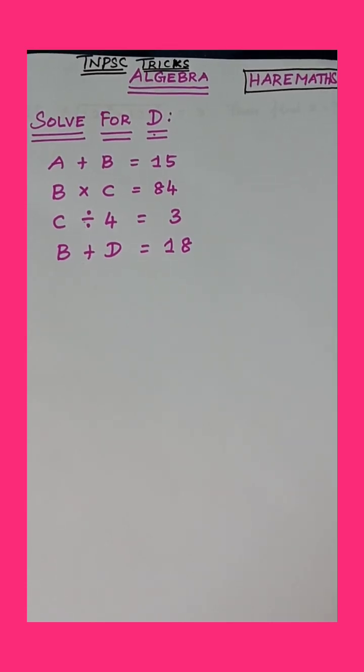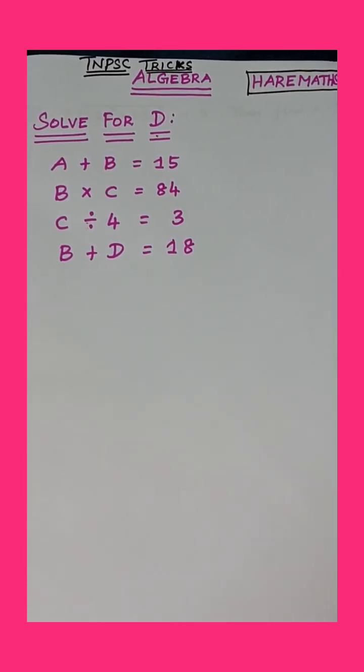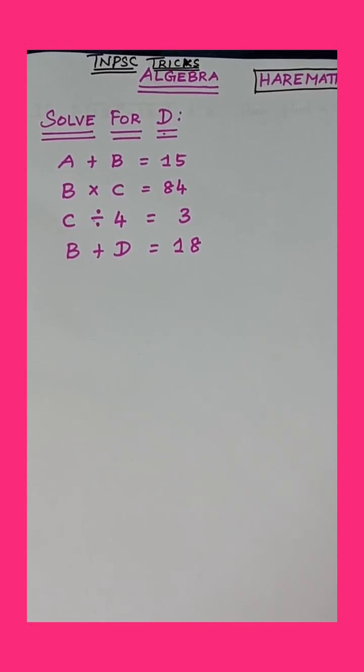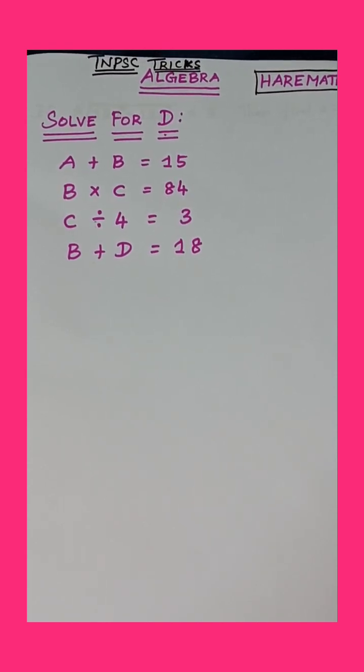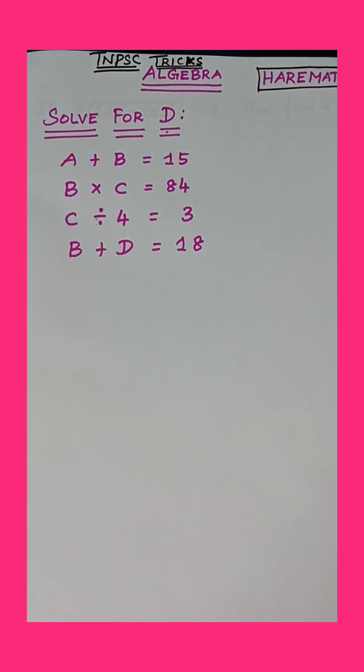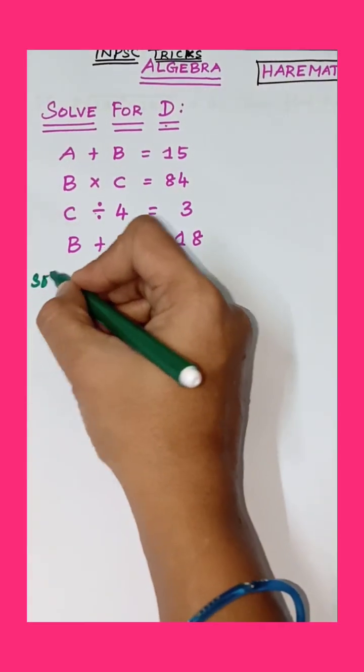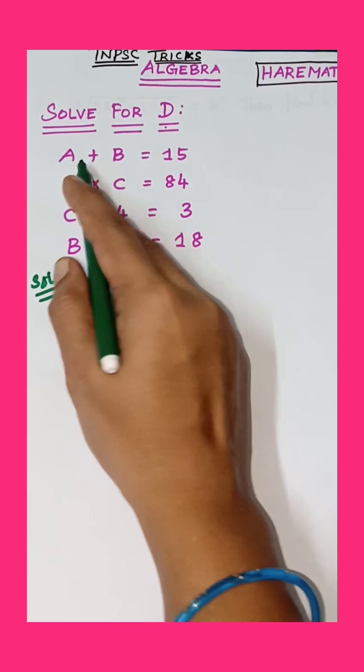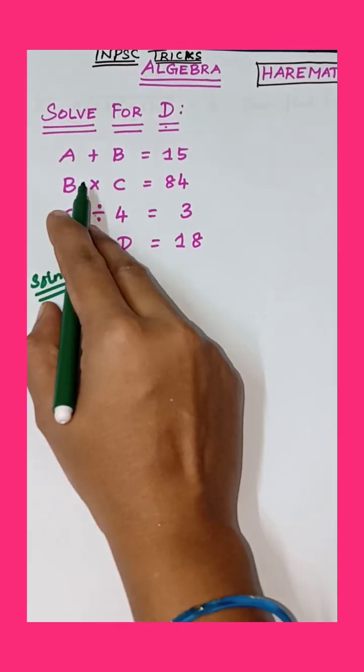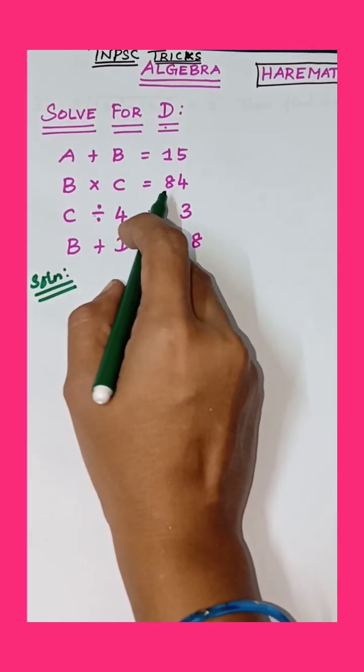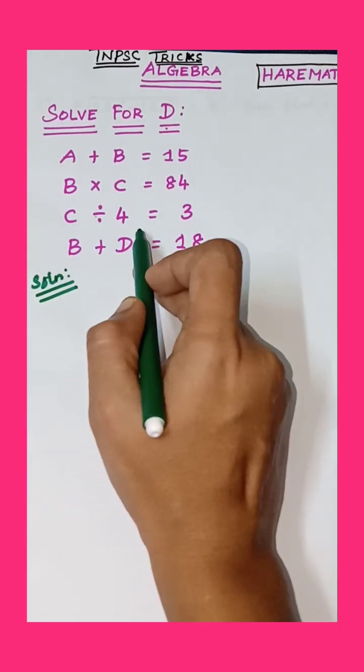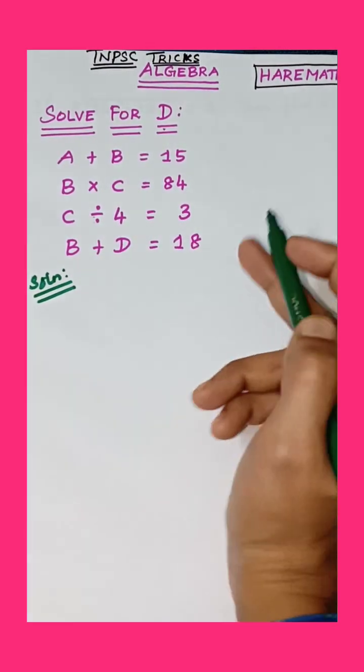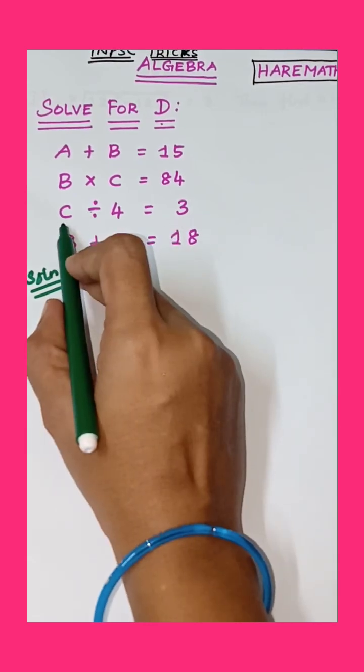Topic is TNPC tricks algebra. Solve for D: A plus B equals 15, B times C equals 84, C divided by 4 equals 3, B plus D equals 18. Solution: A plus B equals 15, B times C equals 84, C divided by 4 equals 3, B plus D equals 18. First take it.